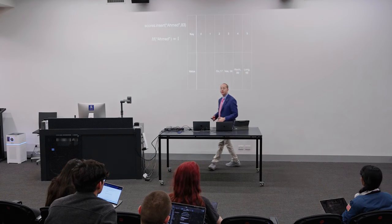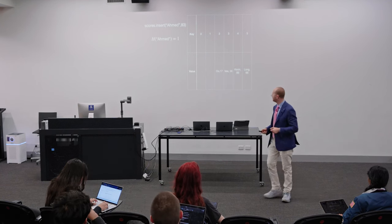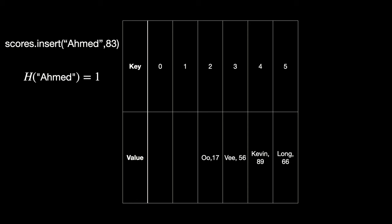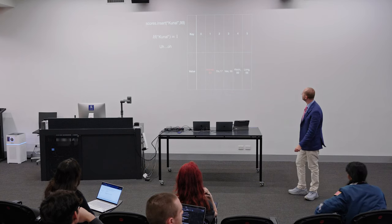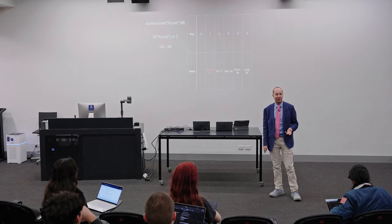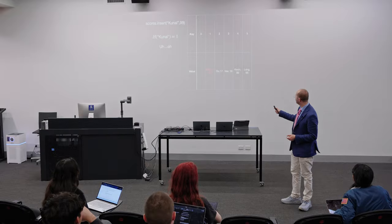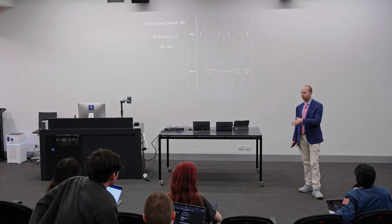Here's how linear probing works schematically. We insert Ahmed into slot one — no problem. We want to insert Kunal, who hashes to the same place as Kevin. Slot two is full, slot three is full, slot four is full, slot five is full — so we loop back to the start, and slot zero is free. However, we've now gone through n minus one items to get to this point, giving us O(n) insert time.